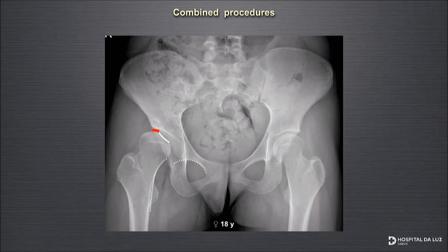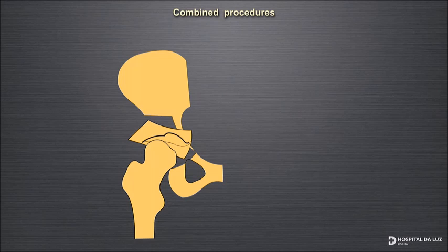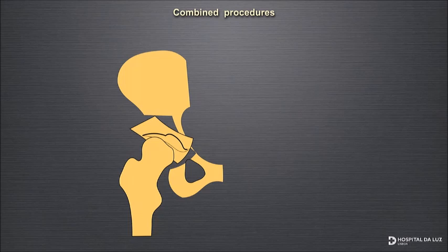This is the planning for this surgery. We need an acetabular reorientation, and if we want to unload the fovea area, we would need to do an overcorrection — but this is something we don't want to do. So we must balance the weight-bearing area over the femoral head, and we need to do something on the femoral side. This is the final result after the osteotomy has healed. We have centered the joint, put the fovea in a much lower position, and dramatically increased the surface contact area.